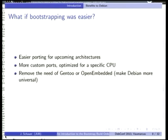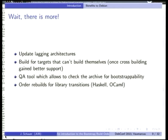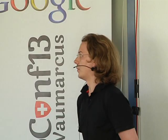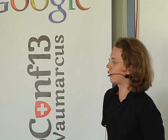What could we have if bootstrapping was easier? The most obvious thing is that porting for upcoming architectures would be easier. We could also see more custom ports optimized for a specific CPU. It would remove the need for Gentoo OpenEmbedded and make Debian more universal, because it would be able to bootstrap itself. You can also use it to update lagging architectures, build for targets that can't build themselves once cross-building works better, have a QA tool to regularly check the archive for bootstrappability, and use it to order library transitions that include cycles — like Haskell or OCaml — since the current tool Ben can't handle cycles.